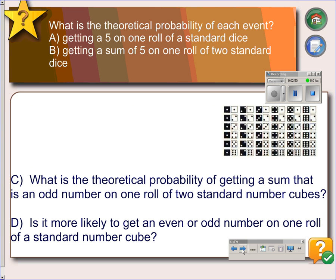For example, what is the theoretical probability of each event? Part A: getting a 5 on one roll of a standard die. So we're looking for the probability of getting a 5. Since there are six possible outcomes,